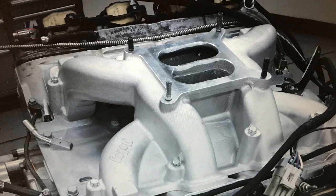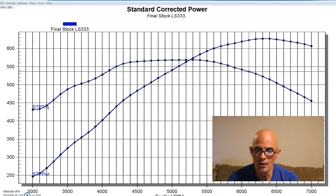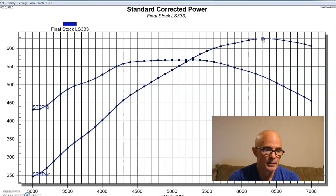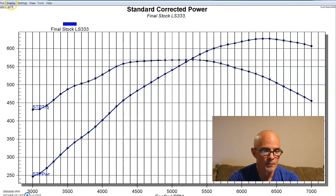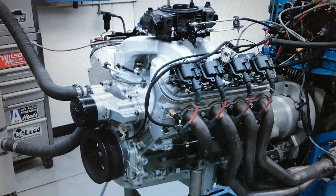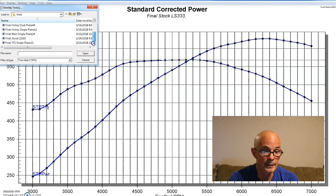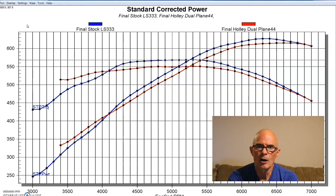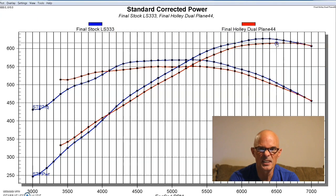Our next test is another dual-plane intake from Holley. This is our LS3 intake, 627 horsepower and 567-568 foot-pounds of torque. Here's what happened when we installed the Holley dual-plane intake. Similar thing to the RPM from Edelbrock, it made a little bit less peak power. In this case, we're looking at 614, 615, similar peak power numbers. And like with the other dual-plane, it made more power down low, below 4000 RPM, than the long-runner LS3 intake.